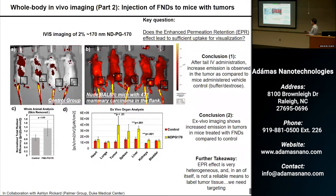What we ended up seeing with these non-targeted diamonds injected into mice with tumors — even in ex vivo analysis done with IVIS, just taking out the organ and looking at the fluorescence emission intensity — is that versus a control of dextrose buffer, we do see an increase in the fluorescent emission intensity of the tumor and then spleen and liver. So there is some merit to this EPR effect, and it could potentially be used to label tumors.